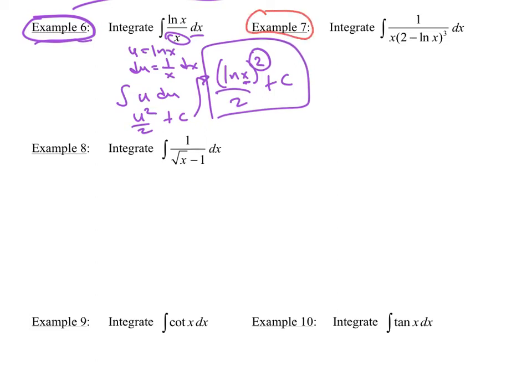Example 7, maybe you want to pause this and try this one yourself. Do you see a function and its derivative? I think so, u is equal to 2 minus ln x. Du is equal to 1 over x dx. I do have the 1 over x right here again, dx. And so when I rewrite this, this is going to be 1 over u cubed du. So now that's u to the negative 3. And so I think you can go ahead and do that one.